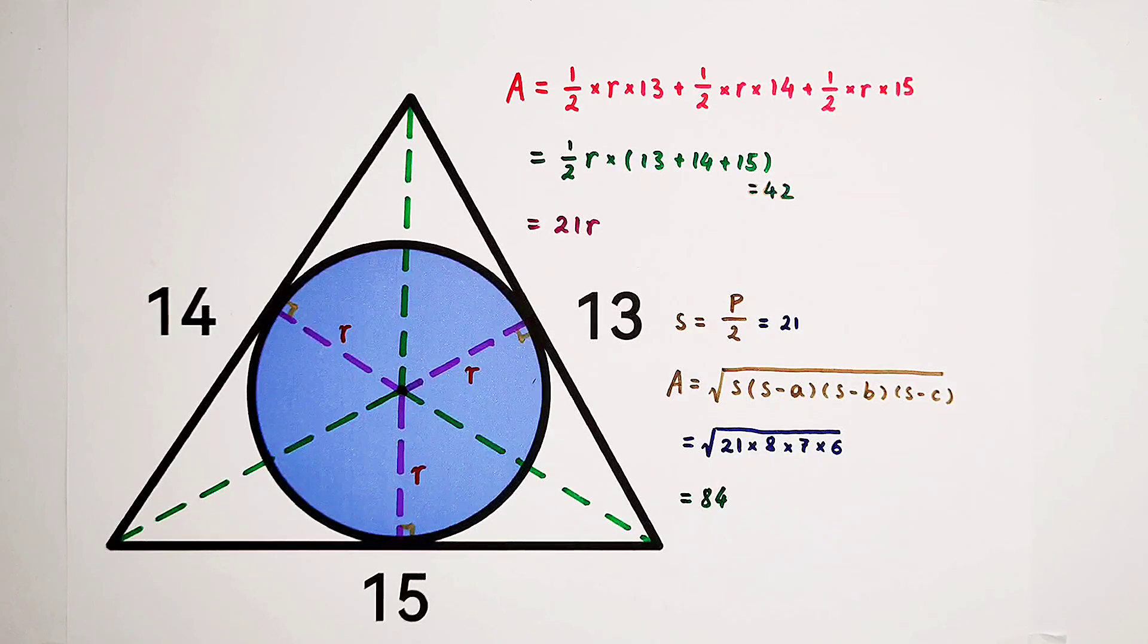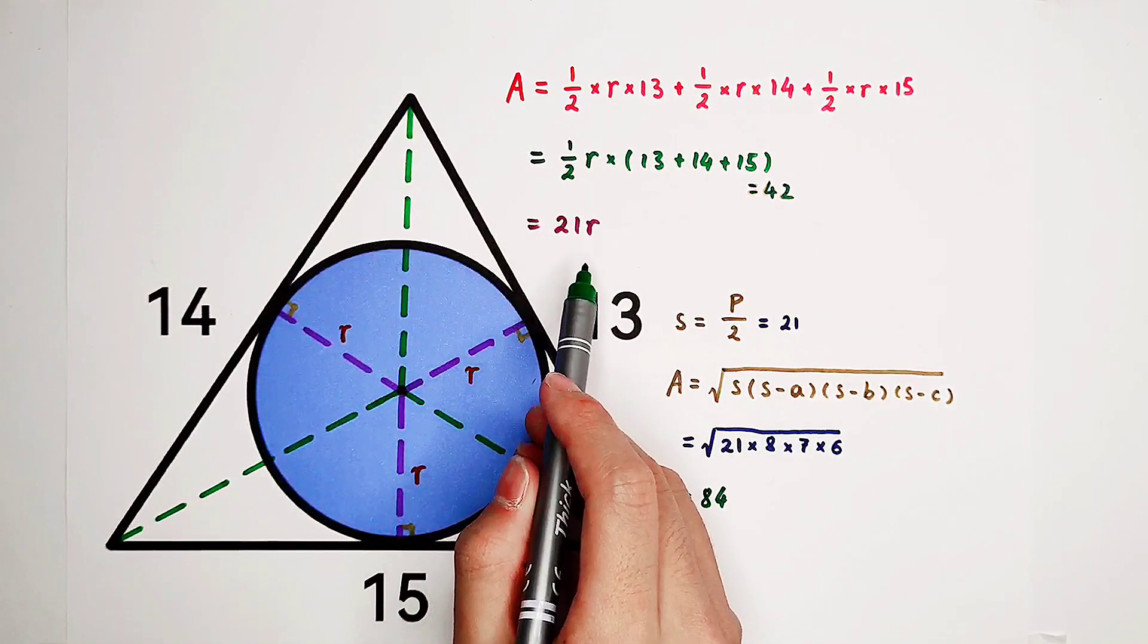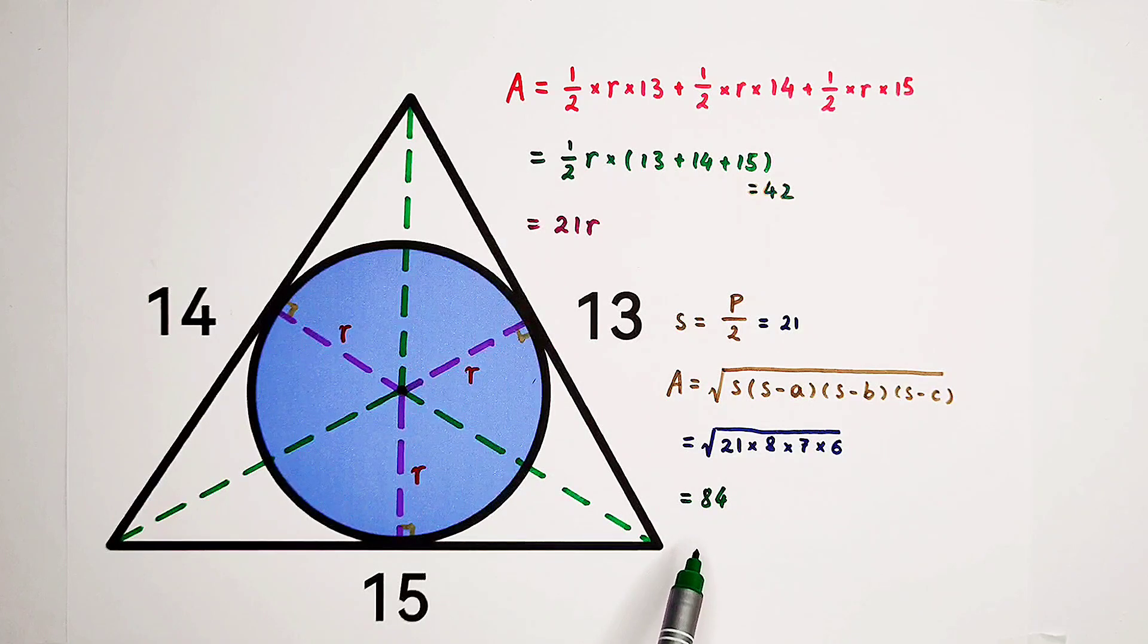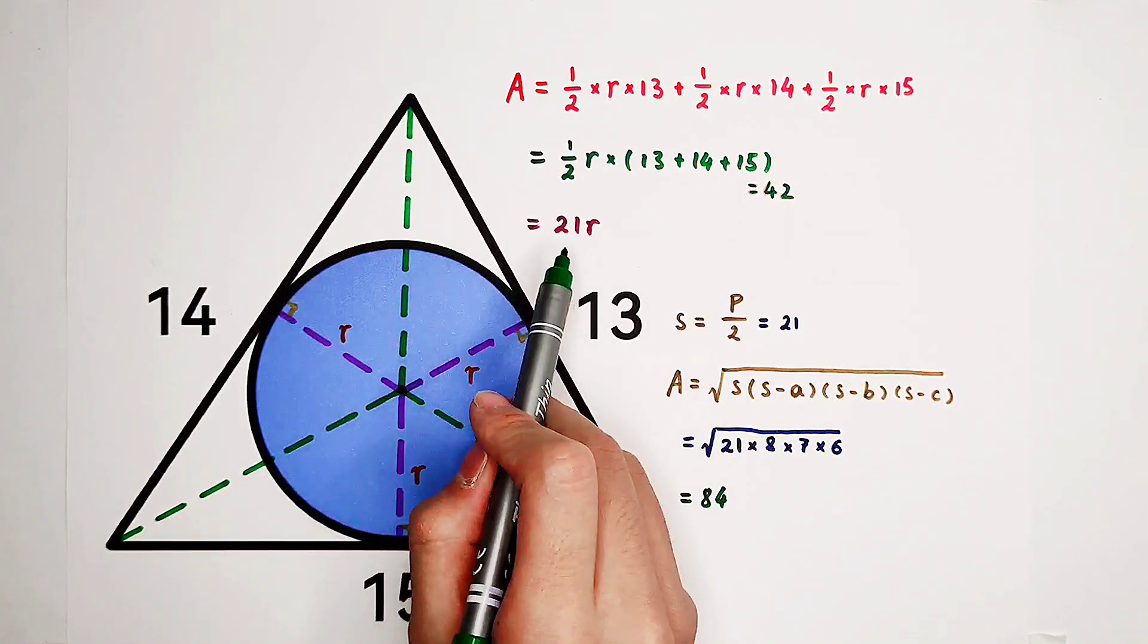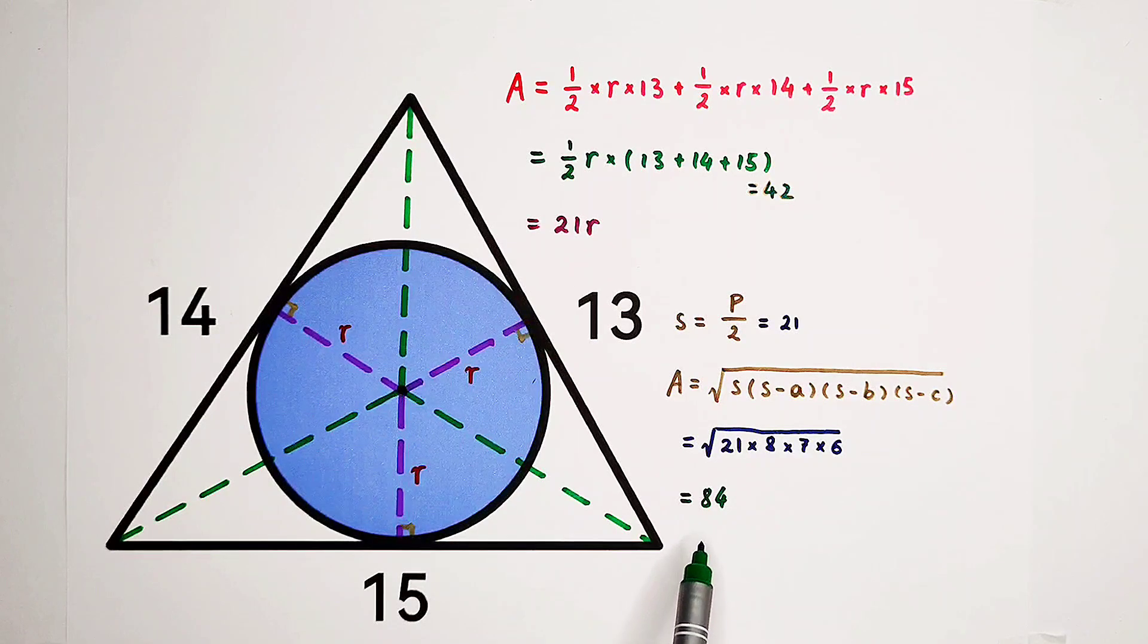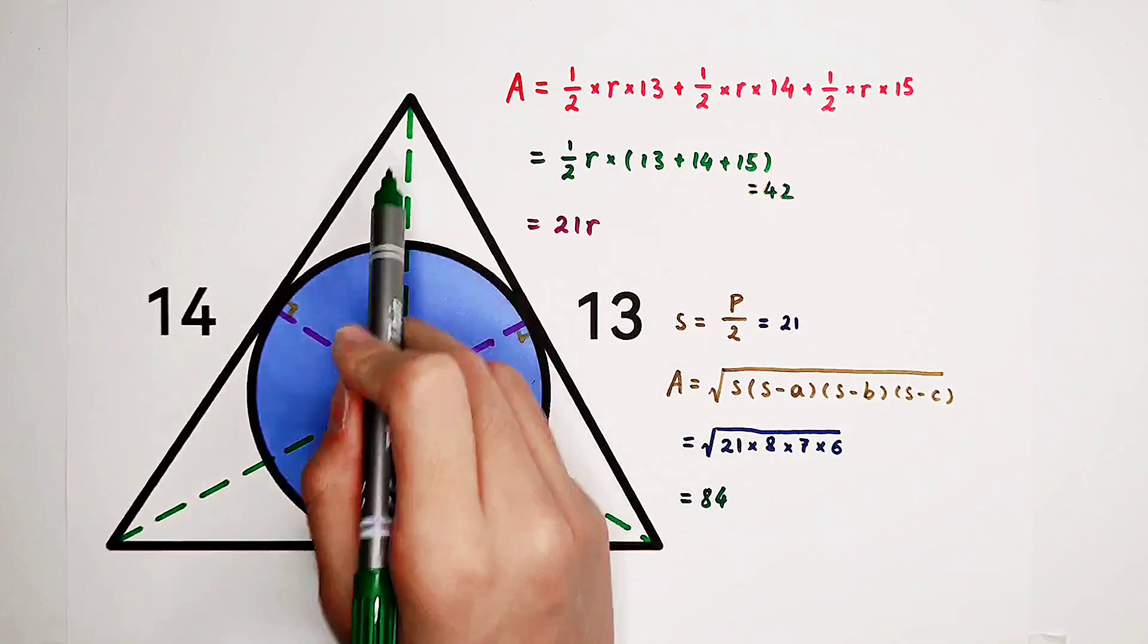So that means the area of the big triangle is 21R, it is also equal to 84.